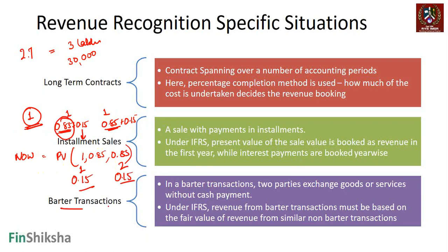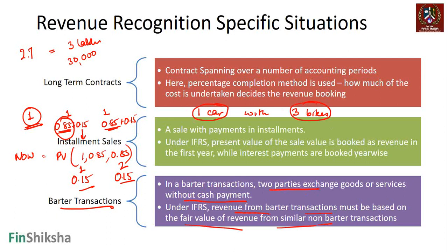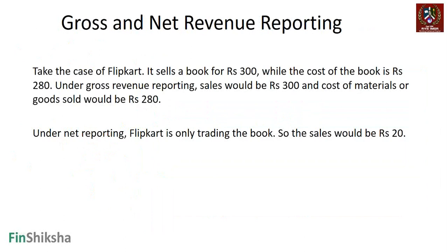Barter transactions are where two parties exchange goods or services without cash payment. Under IFRS — International Financial Reporting Standards — revenue from barter transactions is assumed to be the fair value of a similar non-barter transaction. For example, if you exchange one car for three bikes, the revenue recognized is the fair value of one car or equivalently the fair value of three bikes — that's the number that goes into the income statement.